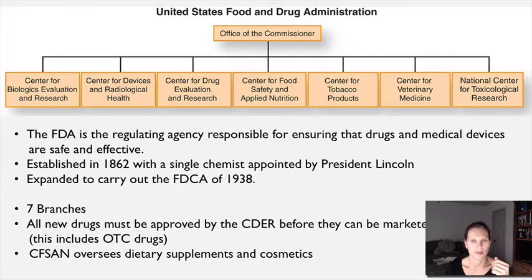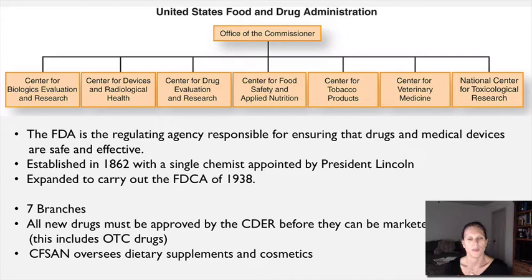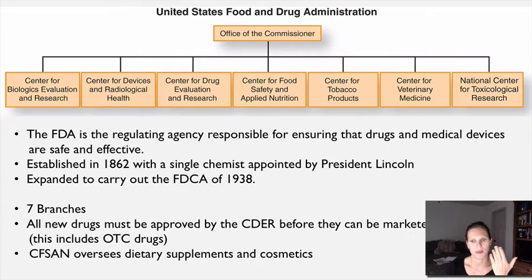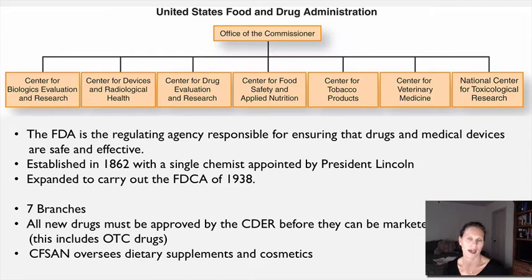At the top of the FDA structure we have the Office of the Commissioner, and then essentially seven branches. For our purposes, new drugs are approved by the Center for Drug Evaluation and Research, or CDER. Drugs have to be approved before they can be marketed, and that includes over-the-counter drugs. The drug companies petition CDER for INDs and bring their clinical trial data back to that branch, which ultimately decides whether a drug goes to market.